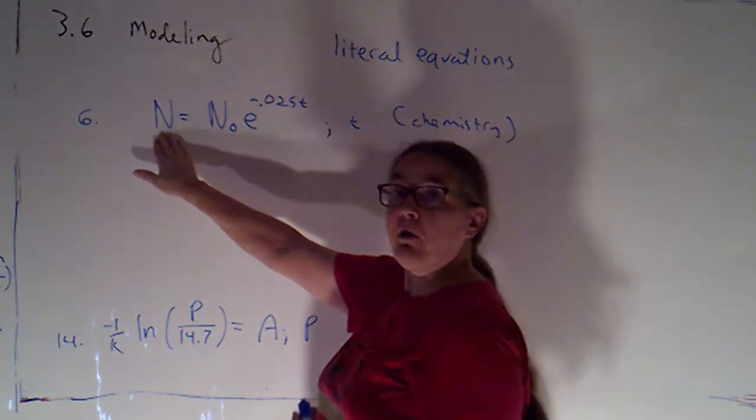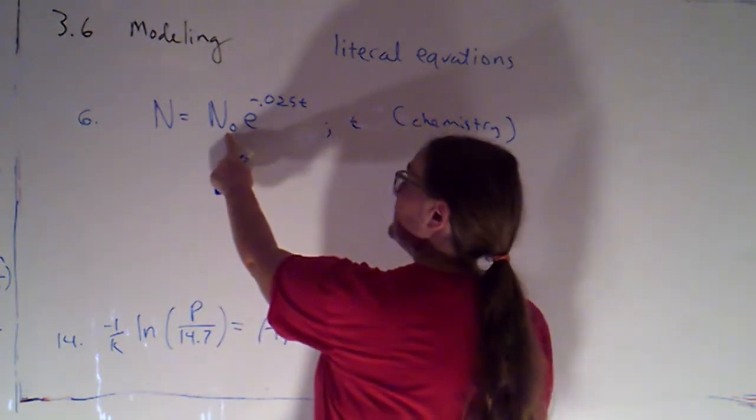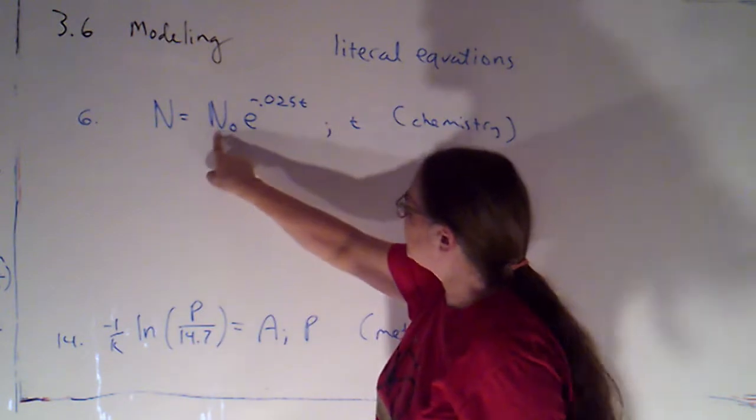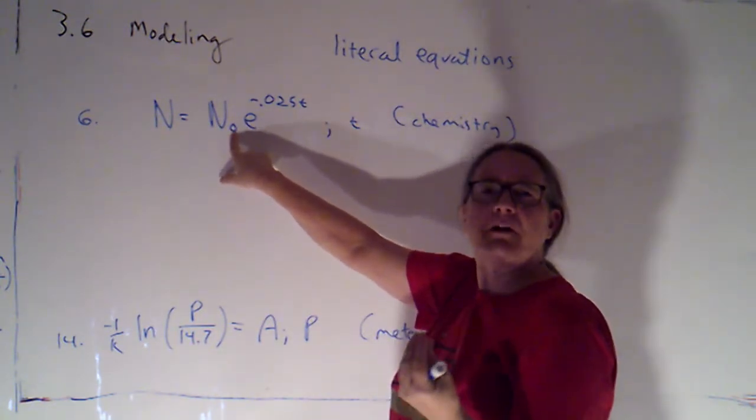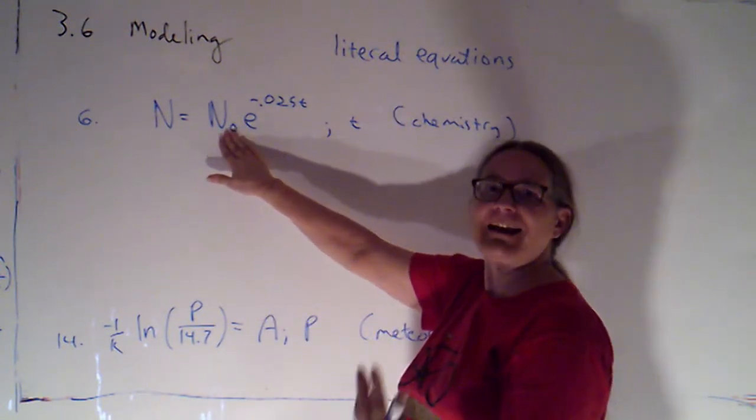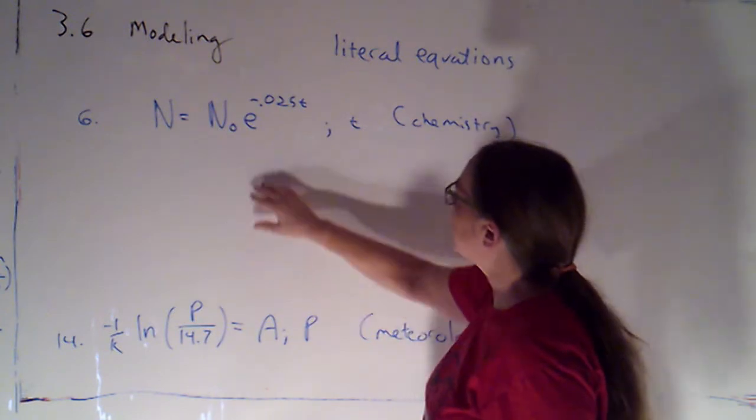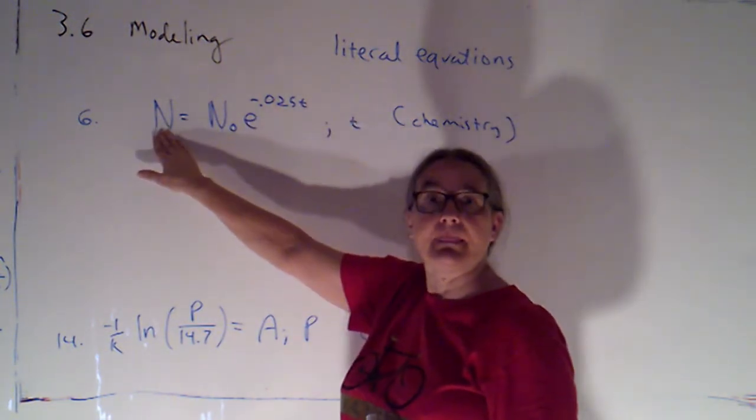But what they're asking us to do is to solve the formula for a particular variable. Right now, this one is solved for n. If I were plugging in n₀, generally when you see that same variable with a subscript of 0, that means the initial value of n. So whatever n represents, that would probably be the value of n at time 0. And then if I were plugging in a value of t, I would be calculating what this is.